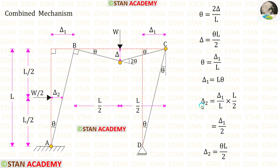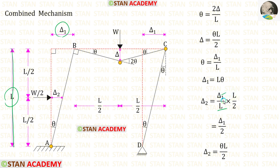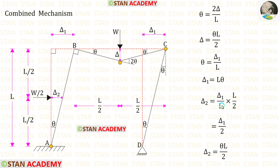Now let us find δ2. For height L the distance is δ1. We need the distance at height L/2, so we multiply by L/2 and eliminate L. Substituting δ1 = Lθ, we get δ2 = θL/2.